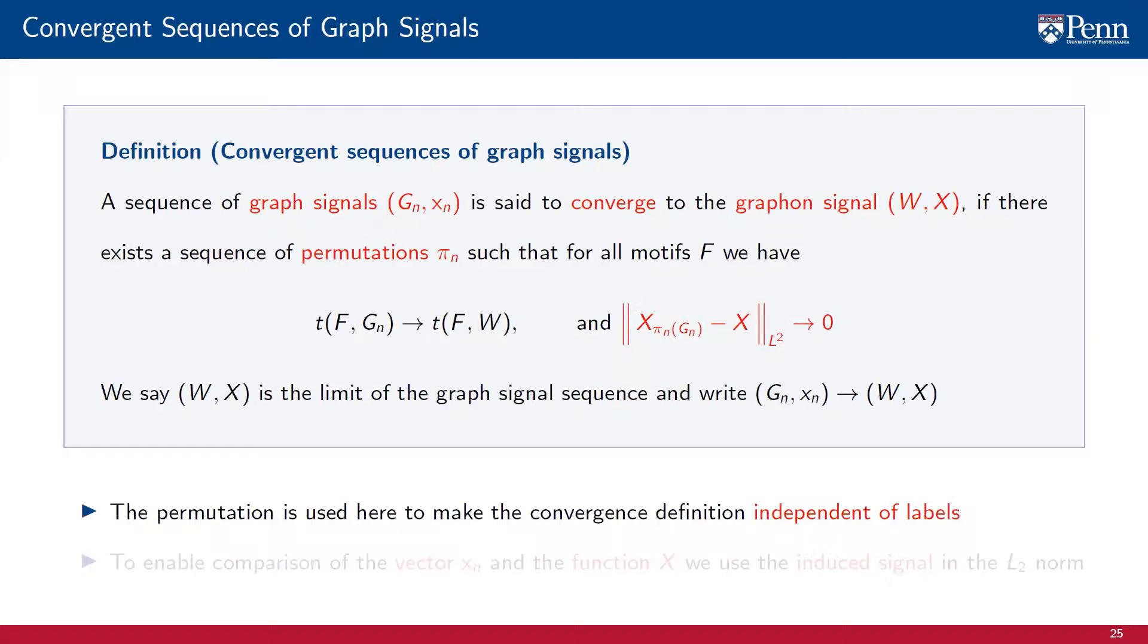The permutation is used in this definition to make convergence independent of labels. This is not needed in the definition of convergence of graph sequences because homomorphism densities are independent of labeling. To retain label independence when comparing signals, we need to incorporate the proper permutations that make the signals as close as possible. This is the same familiar notion of distances modulo permutations which we encountered in our stability analysis of graph filters and GNNs.